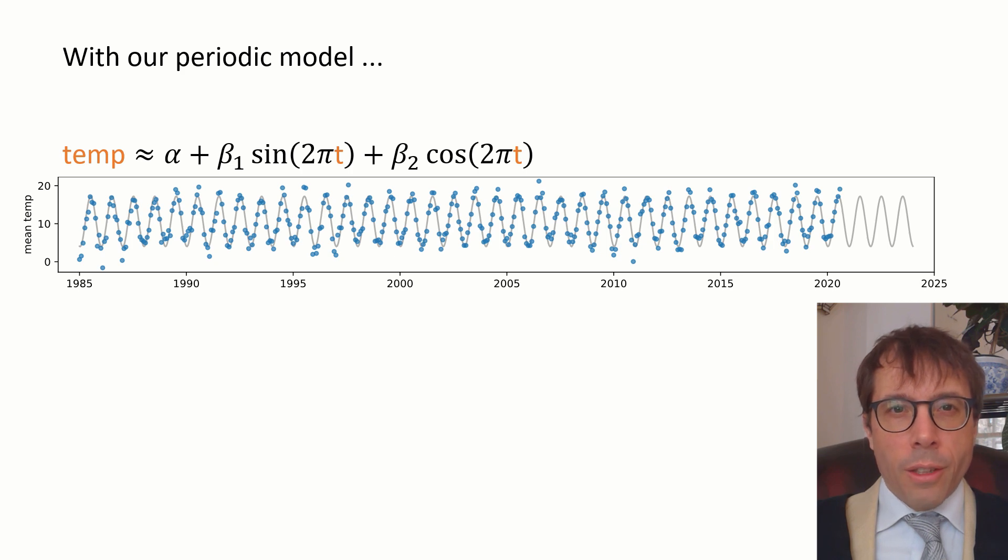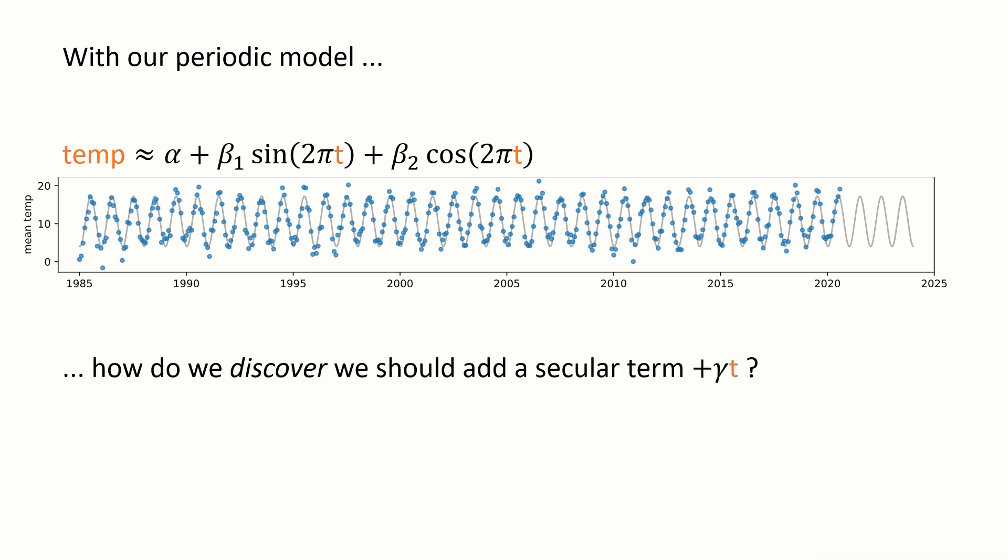Then we tried adding a secular term plus gamma t to the model to allow the model to express the idea that temperatures are gradually changing and we got the estimate gamma hat is 0.0354 degrees C of warming per year. We added in this plus gamma t term because we had an a priori idea that it might be interesting because climate change is a topic of great general interest.